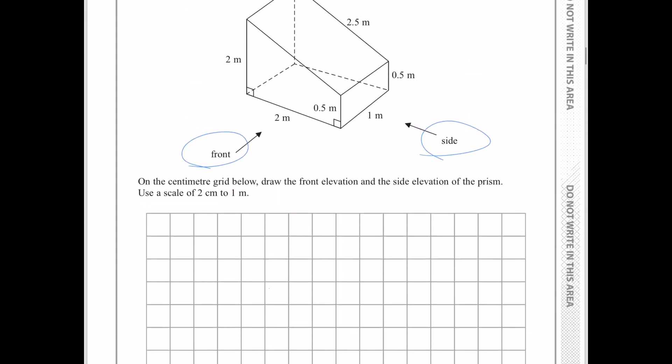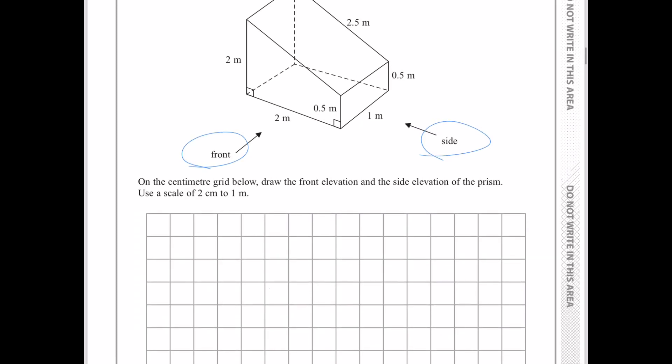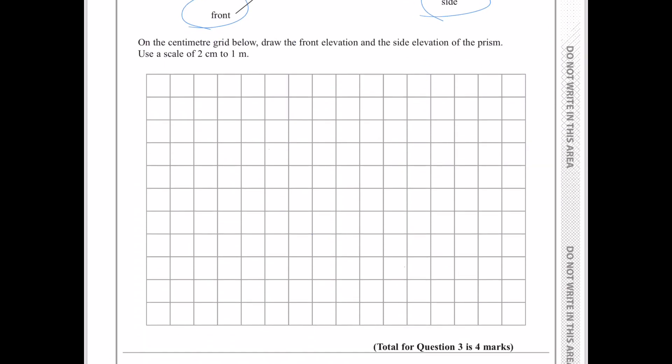I am going to start with the base. The base is 2 metres in the diagram. So, if I use the scale of 2 centimetres to 1 metre, it would be 4 centimetres on the grid. So, 1, 2, 3, 4.